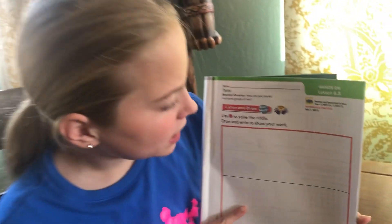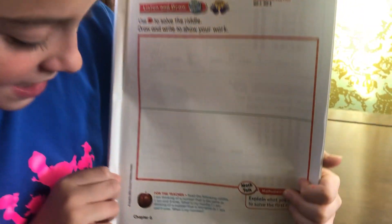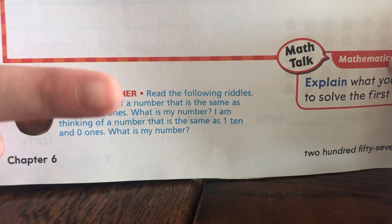Hi boys and girls, it's Gwen, and today we are going to be doing lesson 6.5. It says, I'm thinking of a number that is the same as one ten and four ones. What am I?